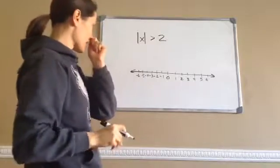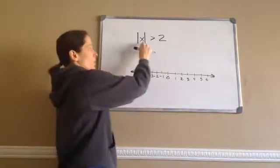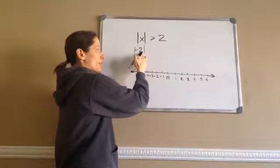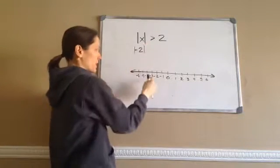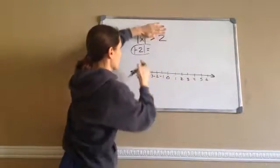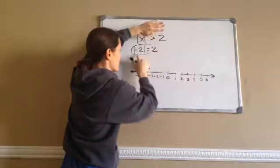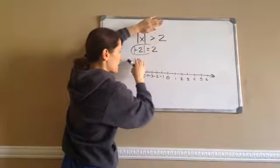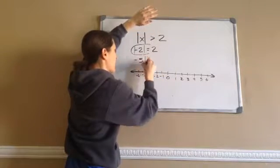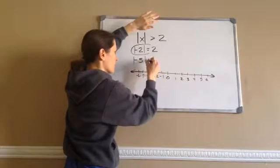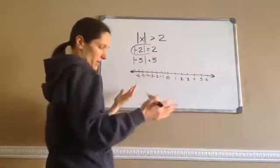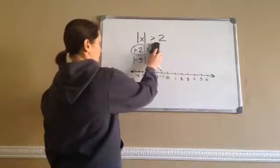Now that I've got that set up, absolute value means basically what is the distance. If I put negative 2 as an absolute value, absolute value always tells me how far is negative 2 from 0. Negative 2 is 2 spots away, so the absolute value of negative 2 is just 2. What about negative 5? How far is negative 5 from 0? It's 5 spaces from 0. Basically, whatever the negative is, it becomes the positive number of it.